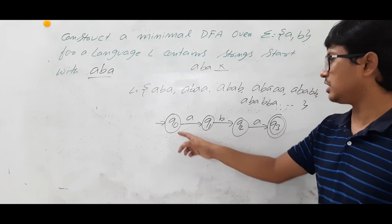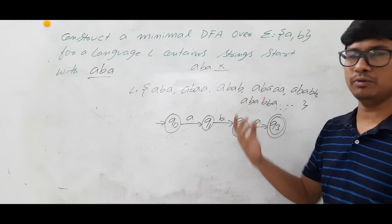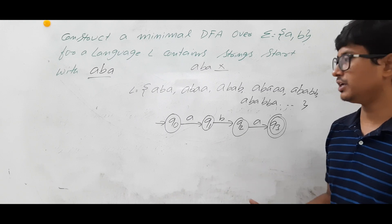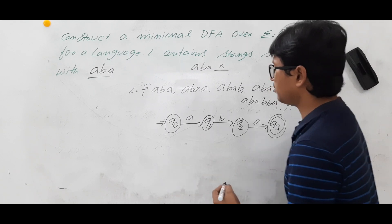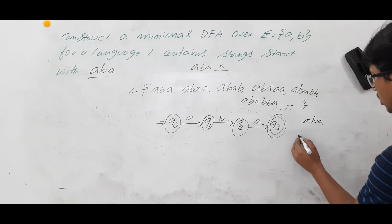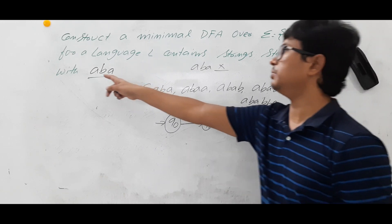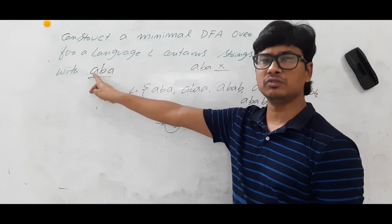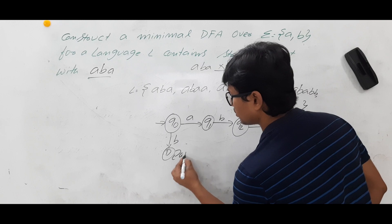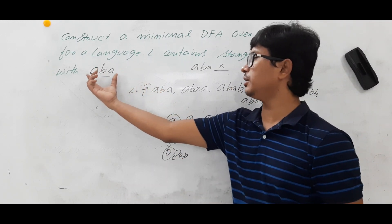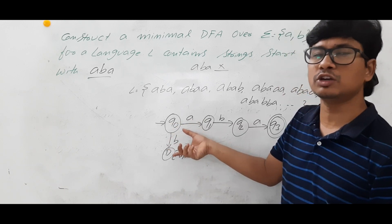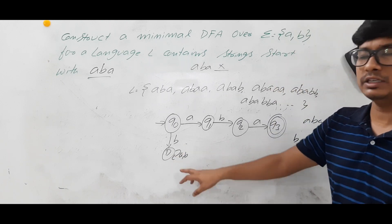The DFA is incomplete because Q0 on B, Q1 on A, and Q2 on B have no transitions yet. From Q0 on B: the string should start with ABA, so it must start with A first. If it starts with B, it is wrong, so Q0 on B goes to the dead state D. From Q1 on A: after seeing A, the next character should be B to form AB. If another A comes, it becomes AA, which cannot lead to a string starting with ABA. So Q1 on A also goes to dead state D.